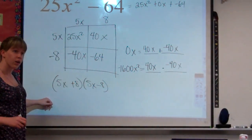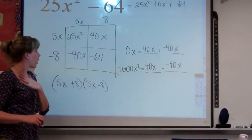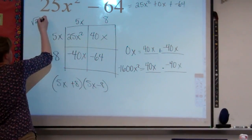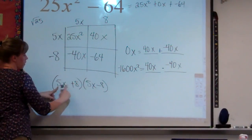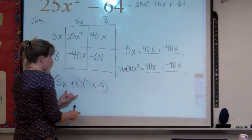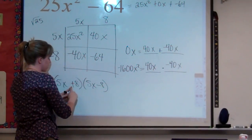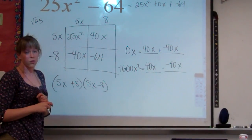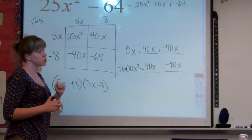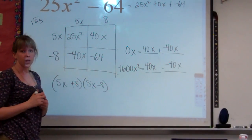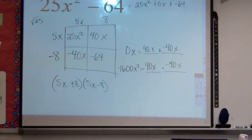A nice little pattern: the square root of 25 is 5, and that's how we got the 5's. The square root of 64 is 8, and that's how we got the 8's — it's just plus 8 and minus 8. If you can remember that pattern, it might make things easier. But the box method works regardless of whether you remember the pattern. Feel free to watch this video again if you still don't understand. Thank you.